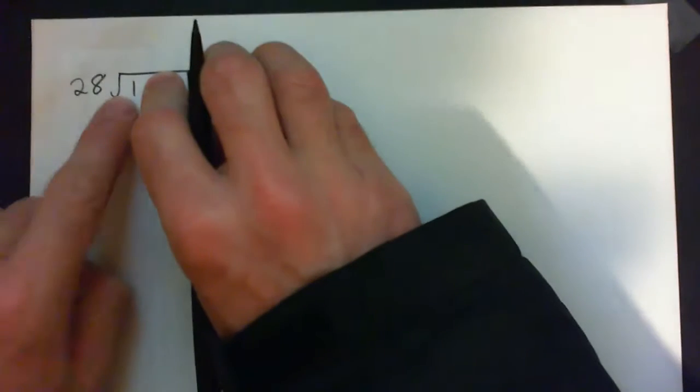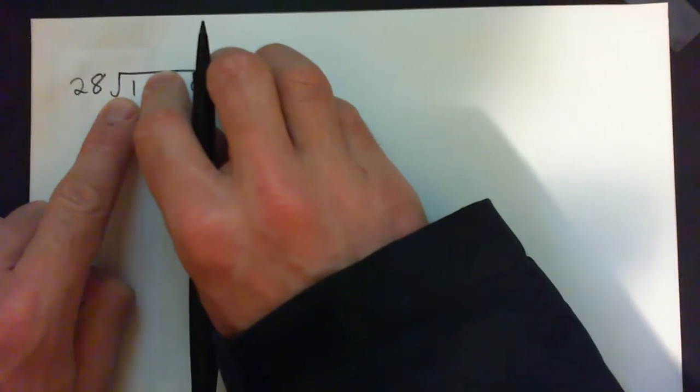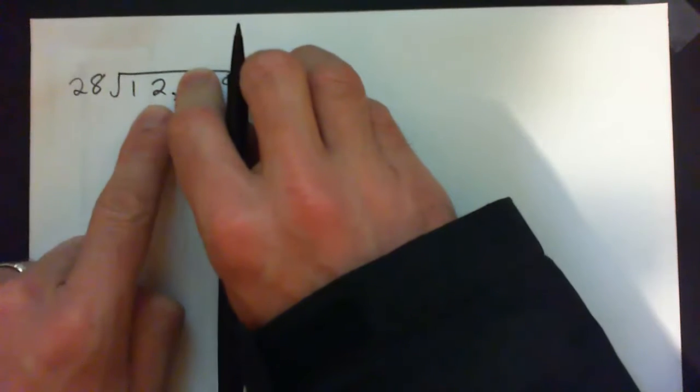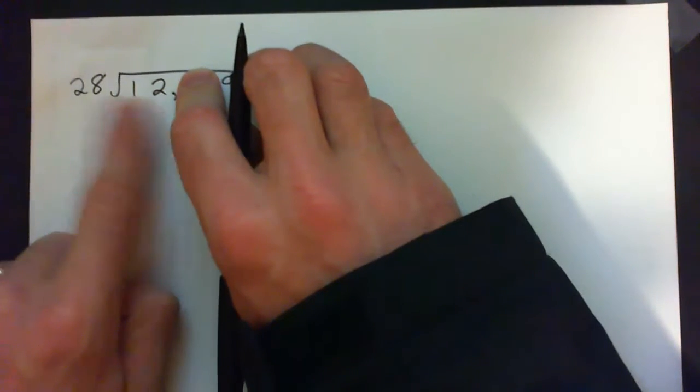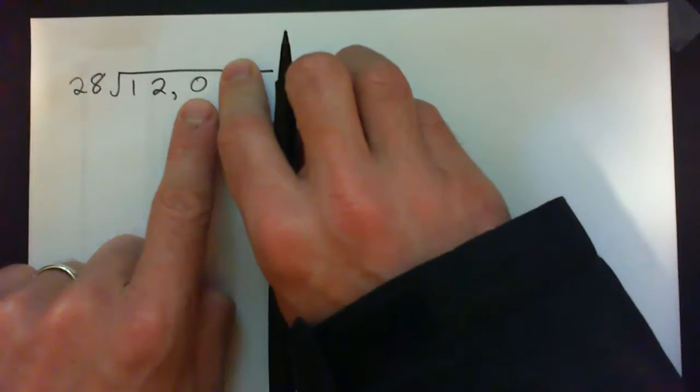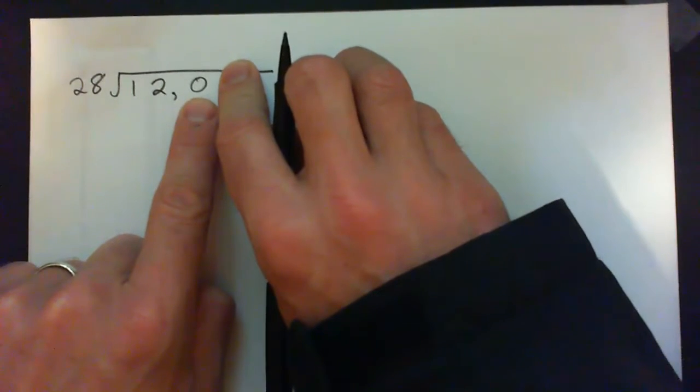We'll try 28 into 1. That won't go, 1's too small. 28 into 12. 12 is smaller than 28, that won't work. So move over and now we have 28 into 120.